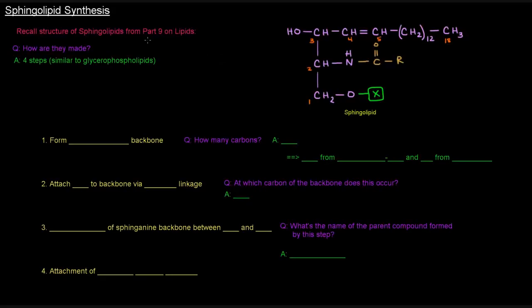If you recall from part 9 on lipids, we talked about sphingolipids and their structure. Sphingolipids have a sphingosine backbone, which is highlighted here in purple, and they have an acyl group attached at carbon number 2 of the backbone via an amide linkage. The polar head group is this X here, and it could be a phospho-alcohol, or it could be a sugar or sugars.